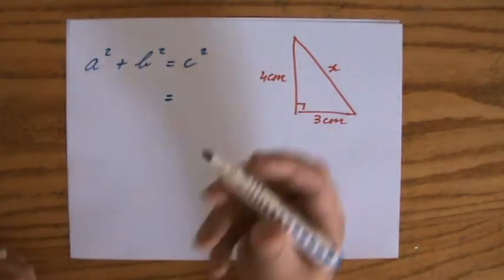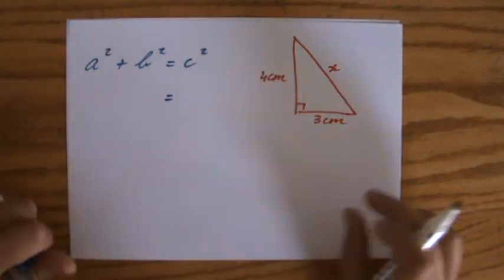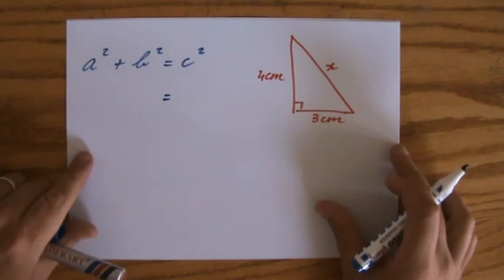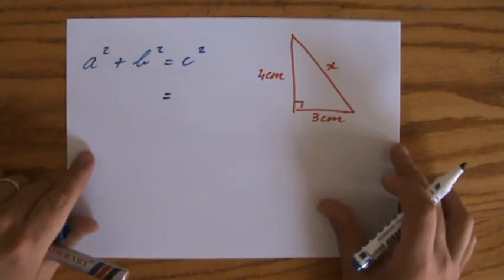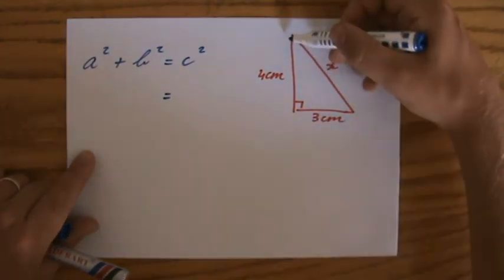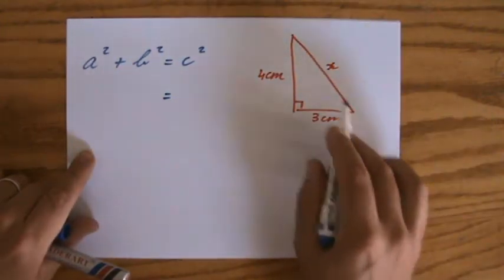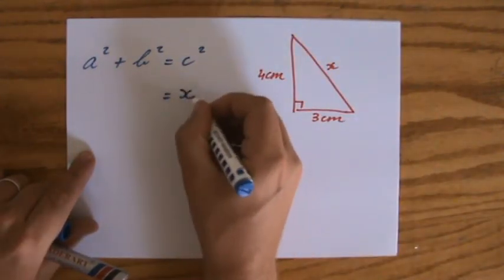I'm going to put that equal sign there already. Because before I start, I determine which side is my hypotenuse. Which side is across the 90-degree angle? Is that my 4? Is that my 3? No, that is my X. I'm going to put there X squared.